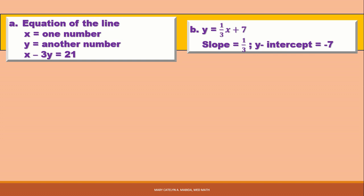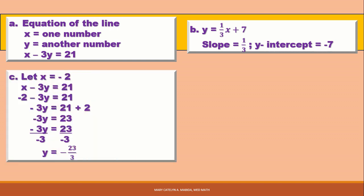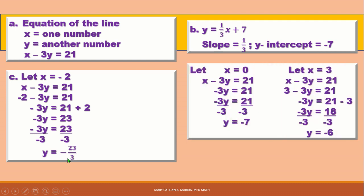Now let us find the three pairs given X is negative 2, 0, and 3. First, let X equal negative 2: substituting gives negative 2 minus 3Y equals 21, so negative 3Y equals 23, and dividing both sides by negative 3 gives Y equals negative 23 over 3. Next, let X equal 0: that leaves negative 3Y equals 21, and dividing both sides by negative 3 gives Y equals negative 7. Lastly, X equals 3: we have 3 minus 3Y equals 21, subtracting 3 from both sides gives negative 3Y equals 18, and dividing by negative 3 gives Y equals negative 6.